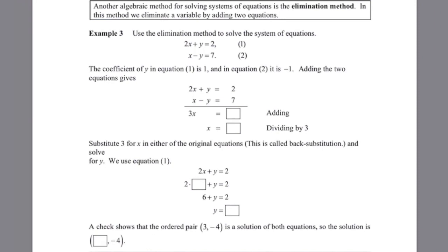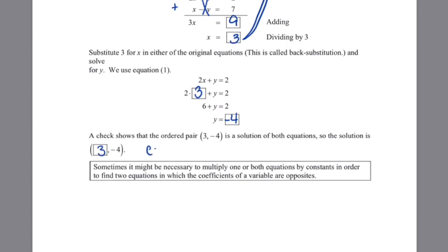We can also use the elimination method, where we eliminate one of the variables. Looking at 2x plus y equals 2 and x minus y equals 7, if we add these equations together the y values immediately cancel. Adding gives 3x equals 9, so x equals 3. Substituting into the first equation: 2 times 3 plus y equals 2, which gives 6 plus y equals 2, so y equals negative 4. The solution is (3, negative 4). This is a consistent, independent solution.